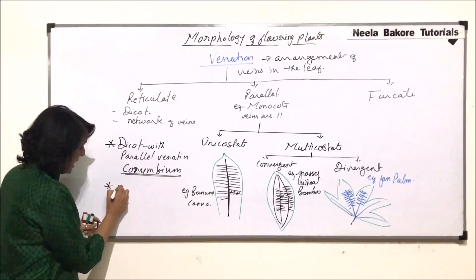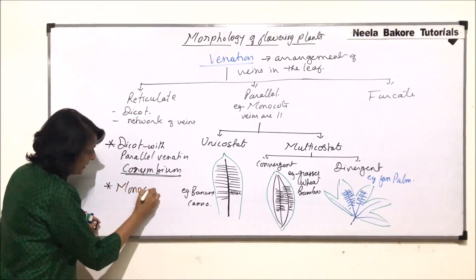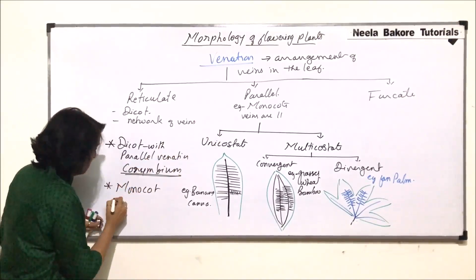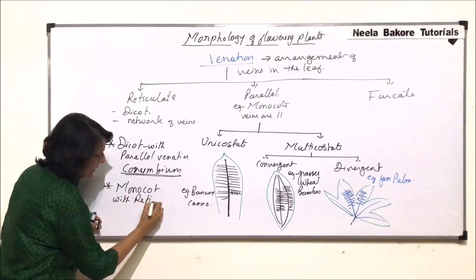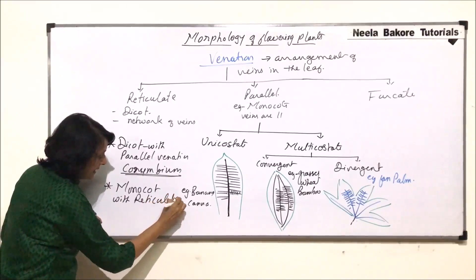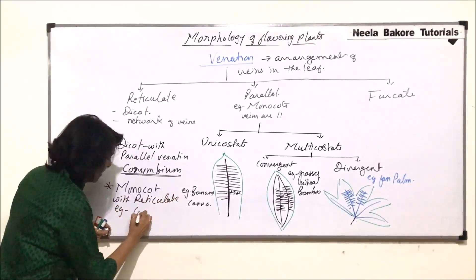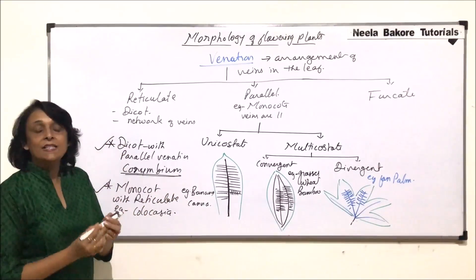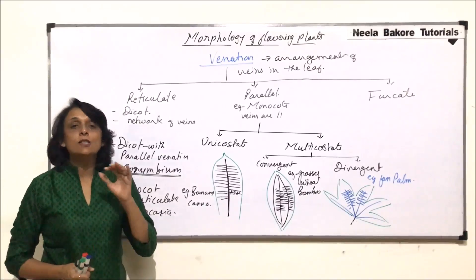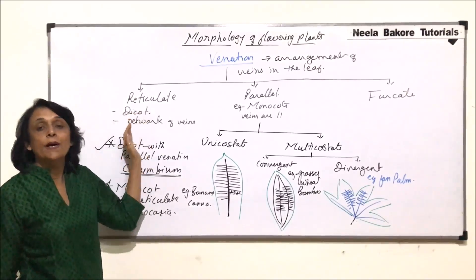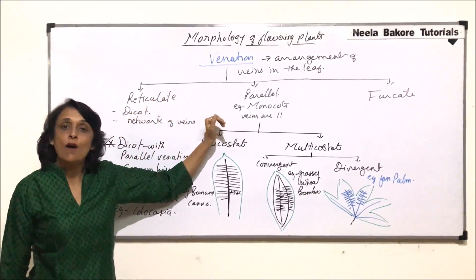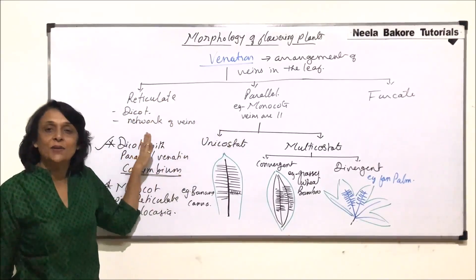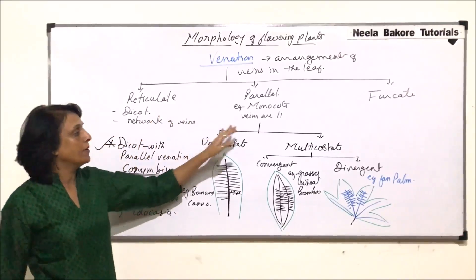Monocot plants where parallel venation is the characteristic feature, but showing reticulate venation — the example is collocasia. These are two important plants where in spite of belonging to a particular group, they show the characteristic feature of the other group — that is, dicot showing parallel and monocot showing reticulate venation. These two names are important.